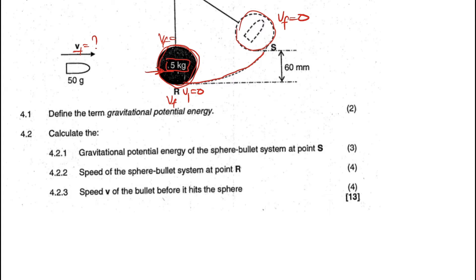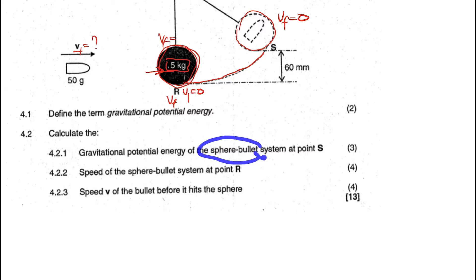Check the exam guideline for the exact wording. Question 4.2 asks to calculate the gravitational potential energy of the sphere-bullet system at point S. At point S, we have the height, and this height needs to be converted from millimeters: dividing by 1000 gives 0.06 meters.